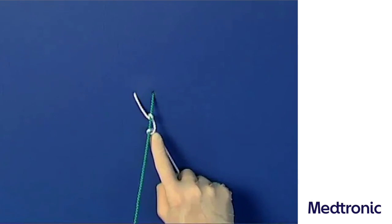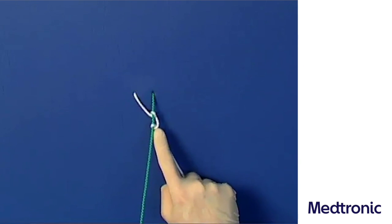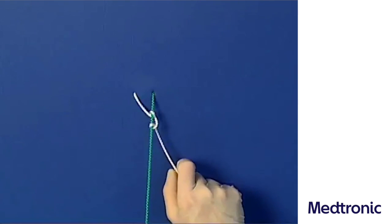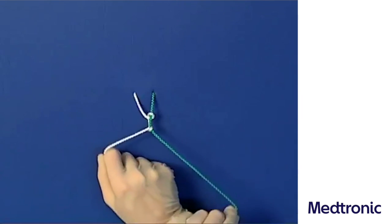Only if the left thread is consistently used as the pulling thread can the formed loops be placed with the index finger. If the pulling force is applied to the tying thread, however, the knot is pulled tight immediately, before achieving its aim.